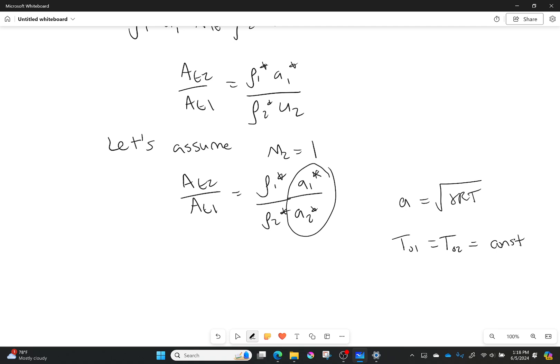And also remember that T naught 1 is equal to T naught 2 is a constant. Even through a shock wave, even through an expansion fan, it's always a constant.